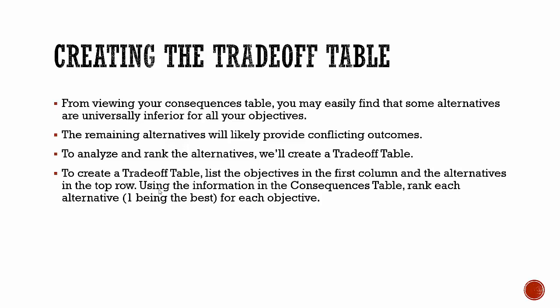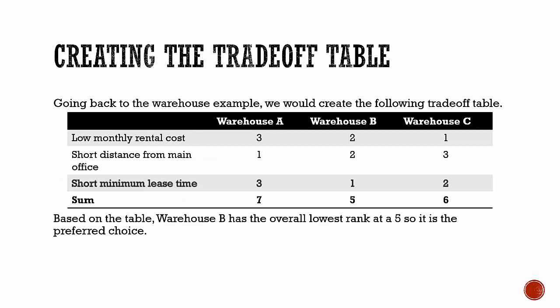However, the information we're going to fill in that table is the ranking for each alternative for each objective. A rank of one means it's the best option for that objective, and in this case because we have three alternatives, three would be the worst. So we create the trade-off table with all objectives in the first column and all alternatives in the top row.